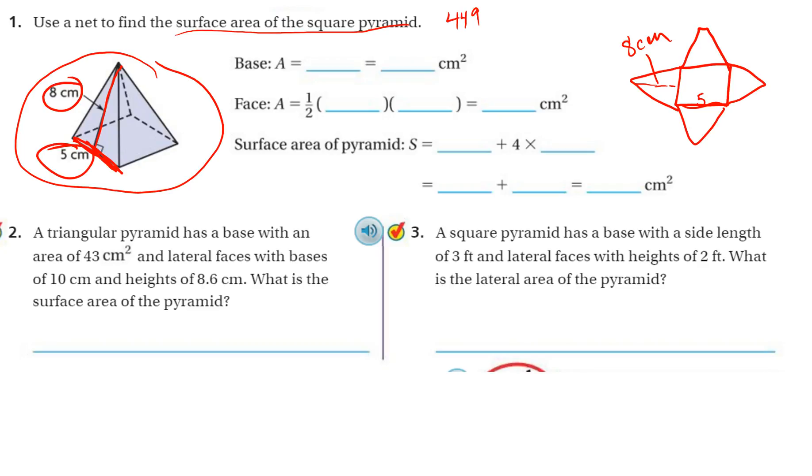Okay, so the base of this square pyramid is a square, obviously. So to find the area, we do 5 times 5, or 5 squared. 5 times 5 is 25. So that's the base. The area of the base is 25.